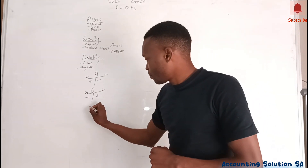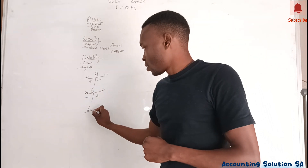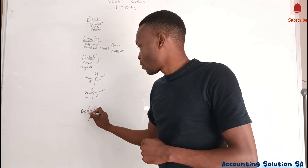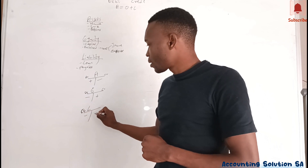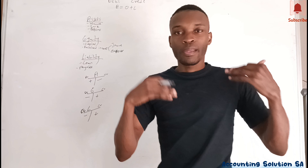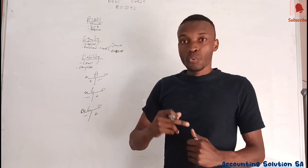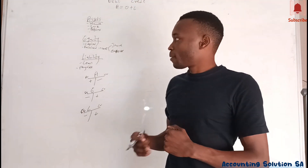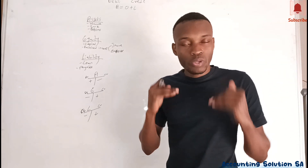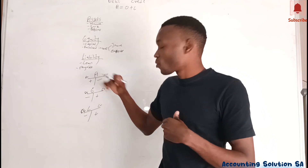Liability works the same as equity — it decreases on the debit side and increases on the credit side, which is a plus. So this debit and credit rule does not apply the same way for assets as it does for equity and liability. You have to know that difference.